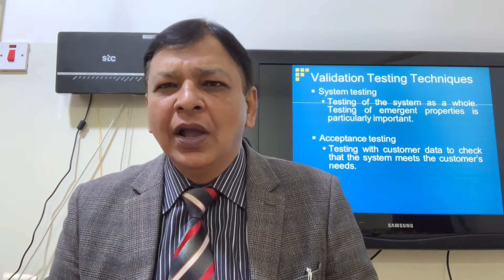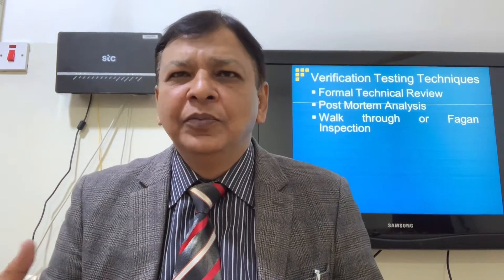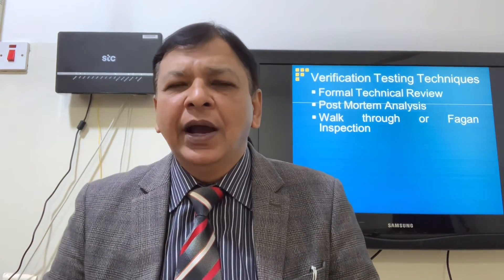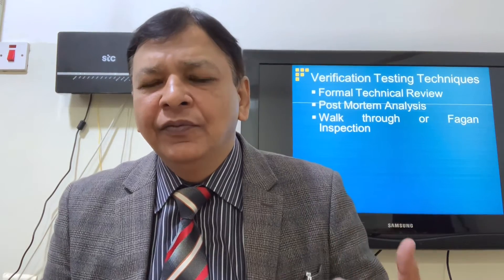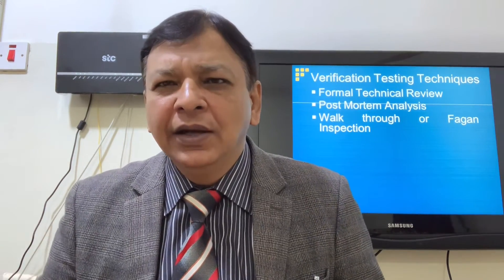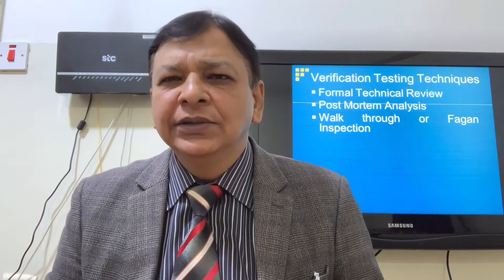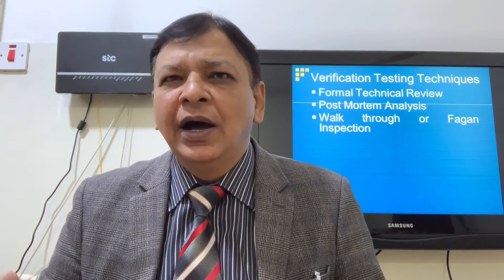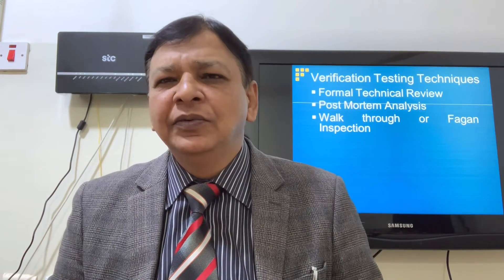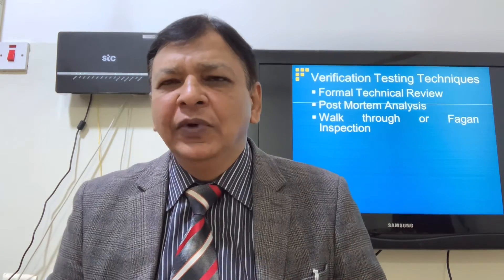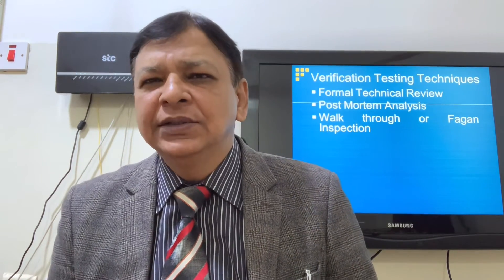Beta testing is also called uncontrolled testing or uncontrived testing. Verification techniques include formal technical review, post-mortem analysis, and walkthrough or Fagan inspection. Formal technical review is a planned meeting where documents and activity outputs of software processes are reviewed — including project specs review, function specs review, design or technical specs review, code review, and maintenance documents. All members must be present and the agenda is communicated before the meeting.